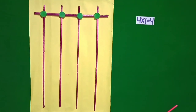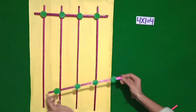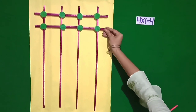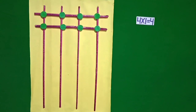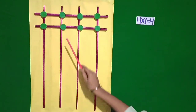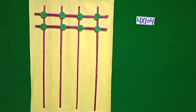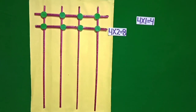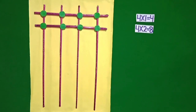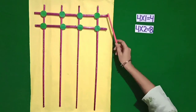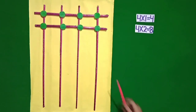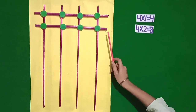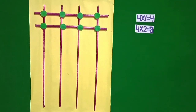Now I am putting one more stick in horizontal position. Now there are 2 sticks in horizontal position and there are 8 intersection points. It means 4 twos are 8.